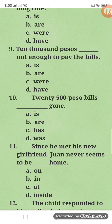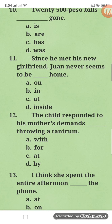Number ten: 20 five-hundred-peso bills are gone — letter B, 'are gone.' Why plural? Because here we're not talking about the amount of money, but the quantity — how many five-hundred-peso bills? There are 20. So it's plural and takes a plural verb.